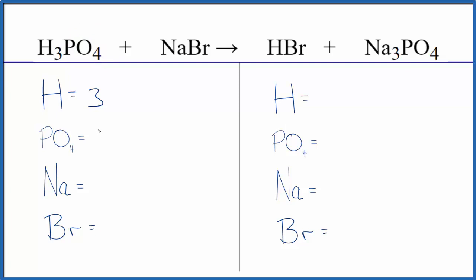So we can say we have one phosphate, then one sodium and one bromine atom on the reactant side. On the product side, hydrogens — we have one of those, we have our one phosphate, three sodium atoms, and then the bromine. This makes it a lot neater and easier to balance the equation. You'll get the same answer either way.